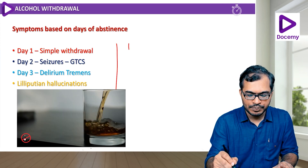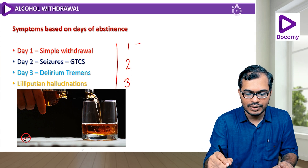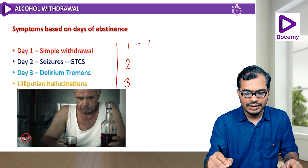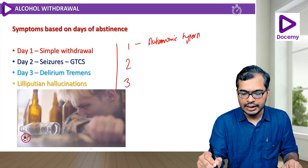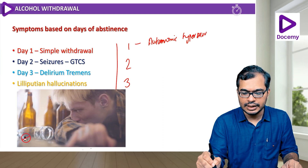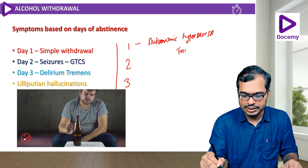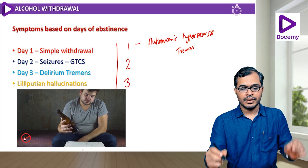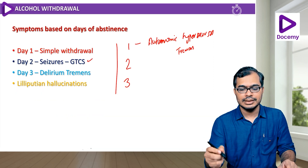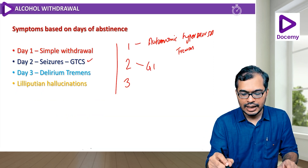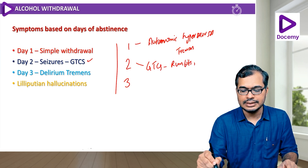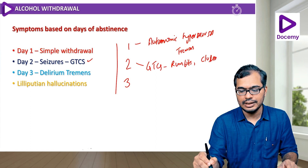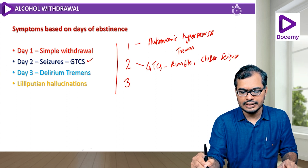In simple withdrawal, the patient will have autonomic arousal features like tachycardia, sweating, and tremors — very important: tremors, tachycardia, and sweating. On day two, the patient will have seizures, which are GTCS, characteristically known as rum fits or cluster seizures.